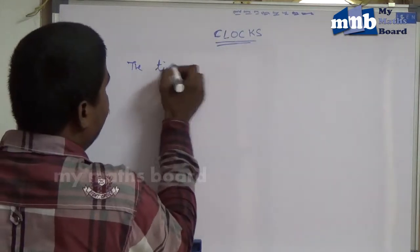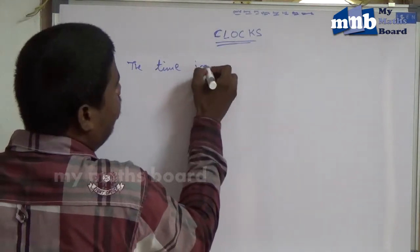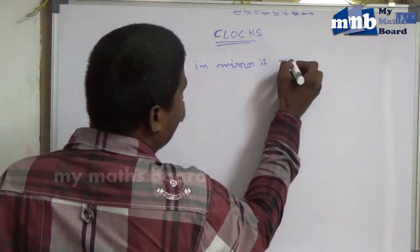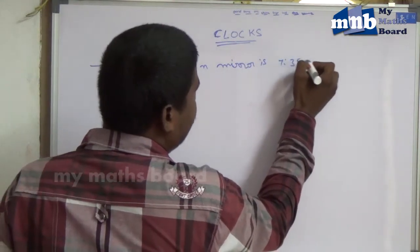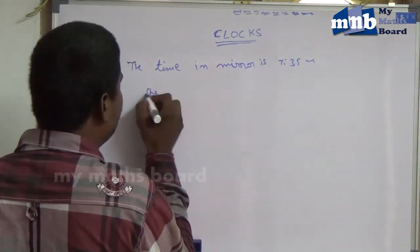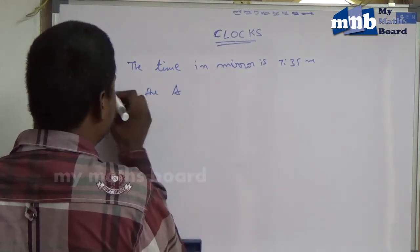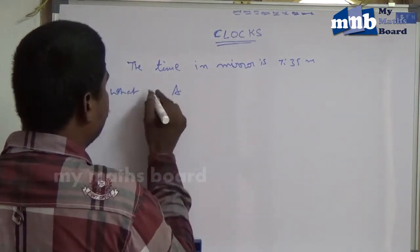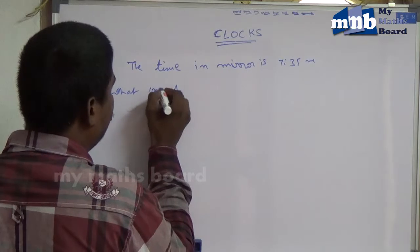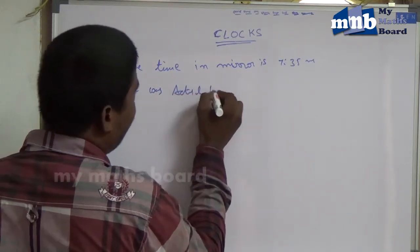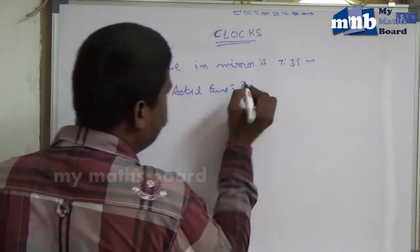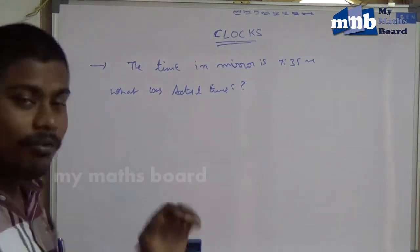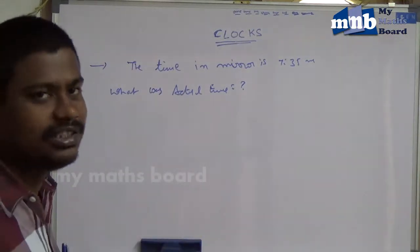The time shown in the mirror is 7:35. What was the actual time? That is the question. The question is given quite opposite to the later process.